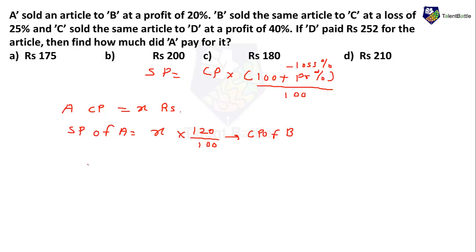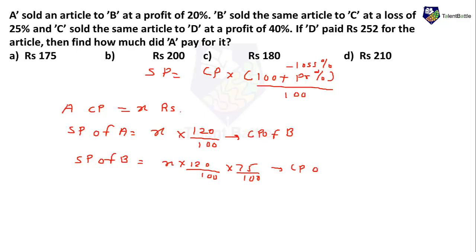Selling price of B = Cost price of B × (75/100), since B sold at a 25% loss, which means (100 − 25) = 75 by 100. So selling price of B = X × (120/100) × (75/100). This selling price of B becomes the cost price of C. Now that I know the cost price of C, I can calculate the selling price of C.